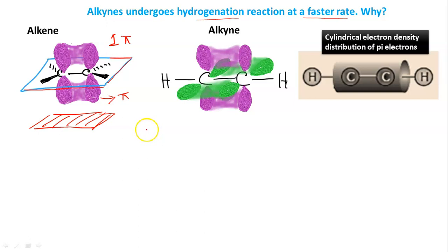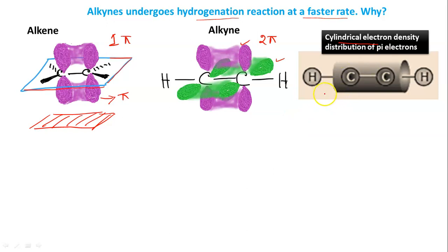In the case of alkyne, there are two pi bonds. When these two pi bonds are merged, it creates a cylindrical electron density. This means there is no specific position required for the metal surface — any approach of the alkyne along the C≡C bond will create a fruitful reaction. Therefore, the transition state for alkyne is lower in energy, meaning activation energy for alkyne is less compared to alkene, and as a result, reactivity of alkyne is increased.